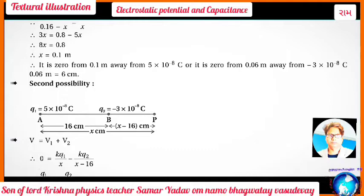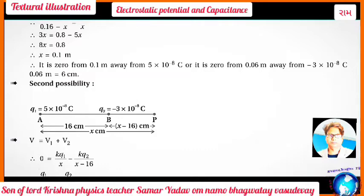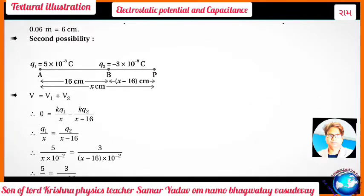Second possibility: Q1 = 5×10⁻⁸ and Q2 = -3×10⁻⁸. The point P is outside the line joining charges A and B. AB = 16 centimeters; A to P = X centimeters, therefore P to B = X - 16 centimeters. So V = V1 + V2 gives: 0 = KQ1/X - KQ2/(X - 16).